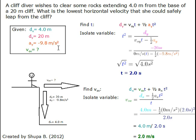Our acceleration here is negative because the cliff diver jumps down from the cliff. And we are trying to solve for our horizontal initial velocity.